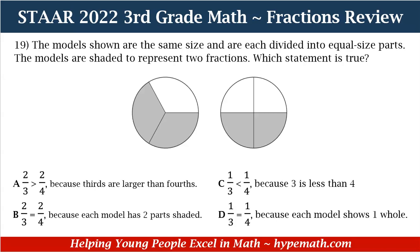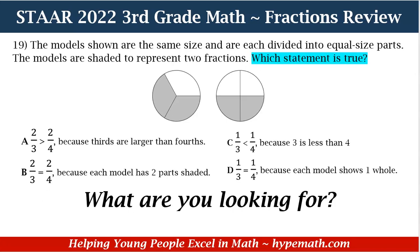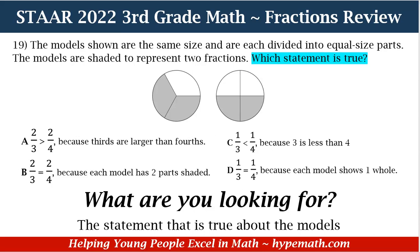Now let's dive into our problems. Number 19 says: the models shown are the same size and are each divided into equal-size parts. The models are shaded to represent two fractions. Which statement is true? Let's look at our models. On the left we see a circle divided into three whole parts — three is our denominator — and two of them are shaded. On the right, the circle is divided into four equal parts — four is our denominator — and two parts are shaded.